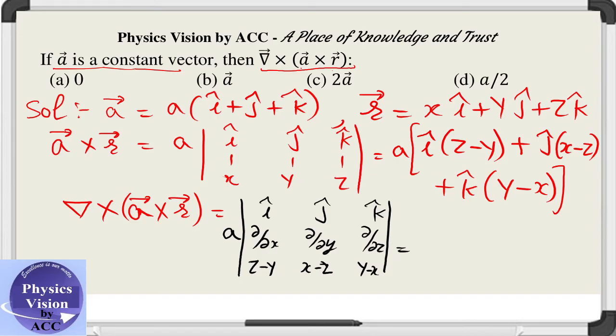Now on solving this, we will get a i cap, then curl by curl y of y minus x is 1, minus curl by curl z of x minus z is minus of minus 1. So this is plus 1. Similarly minus j, a will be giving you minus 1 minus 1 minus 1, and plus k will give us the same thing, that is 2.